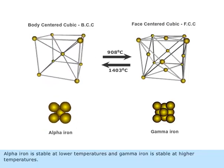Alpha iron is stable at lower temperatures, and gamma iron is stable at higher temperatures.